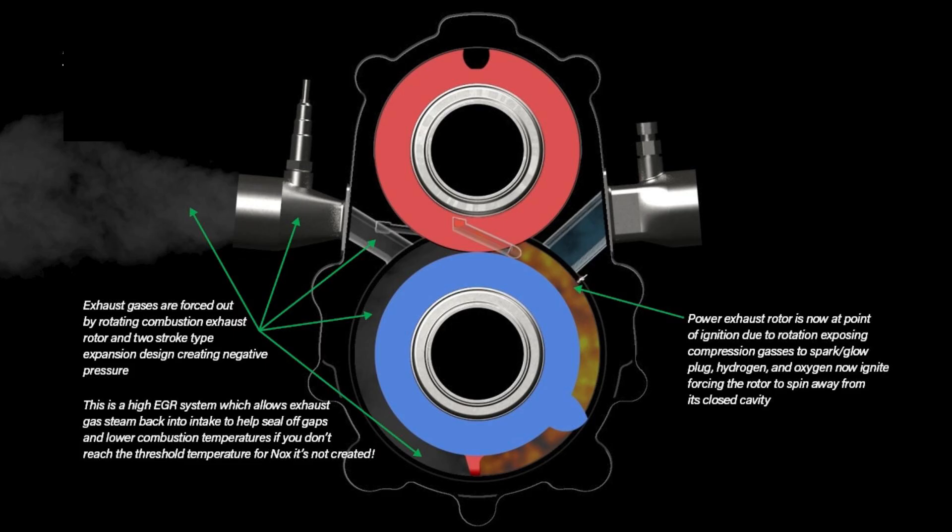Power exhaust rotor is now at point of ignition due to rotation exposing compression gases to spark glow plug. Hydrogen and oxygen now ignite, forcing the rotor to spin away from its closed cavity.